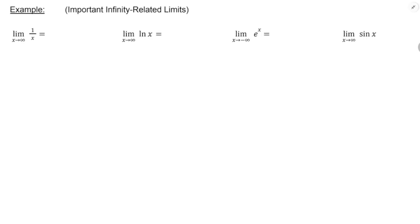Here are a few important infinity-related limits, some more important than others. The first one we just talked about, but this one is really important: as x gets really large, 1 over x goes towards 0, because you're dividing by a larger and larger number while the numerator stays constant.